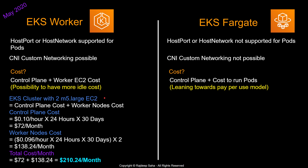For an EKS cluster with two M5 large EC2s: the cost is control plane cost plus worker nodes cost. Control plane is $0.10 per hour, so $72 per month. Worker node cost: M5 large is $0.096 per hour × 24 hours × 30 days × 2 nodes = approximately $138 per month. Total cost for this EKS cluster configuration is $210 per month.